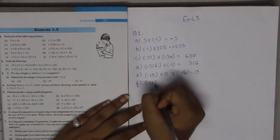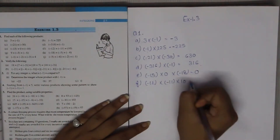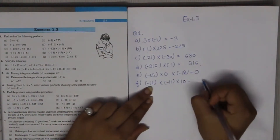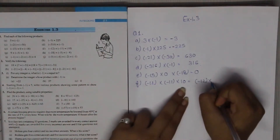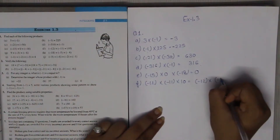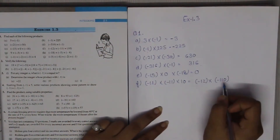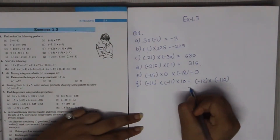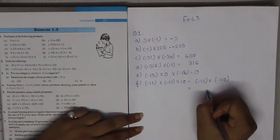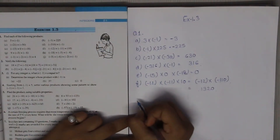Minus 12 multiplied by minus 11 multiplied by plus 10. First we multiply minus 11 by plus 10 to get minus 110. Now we multiply 110 by 12 to get 1320. Negative times negative makes it positive, so the answer is 1320.